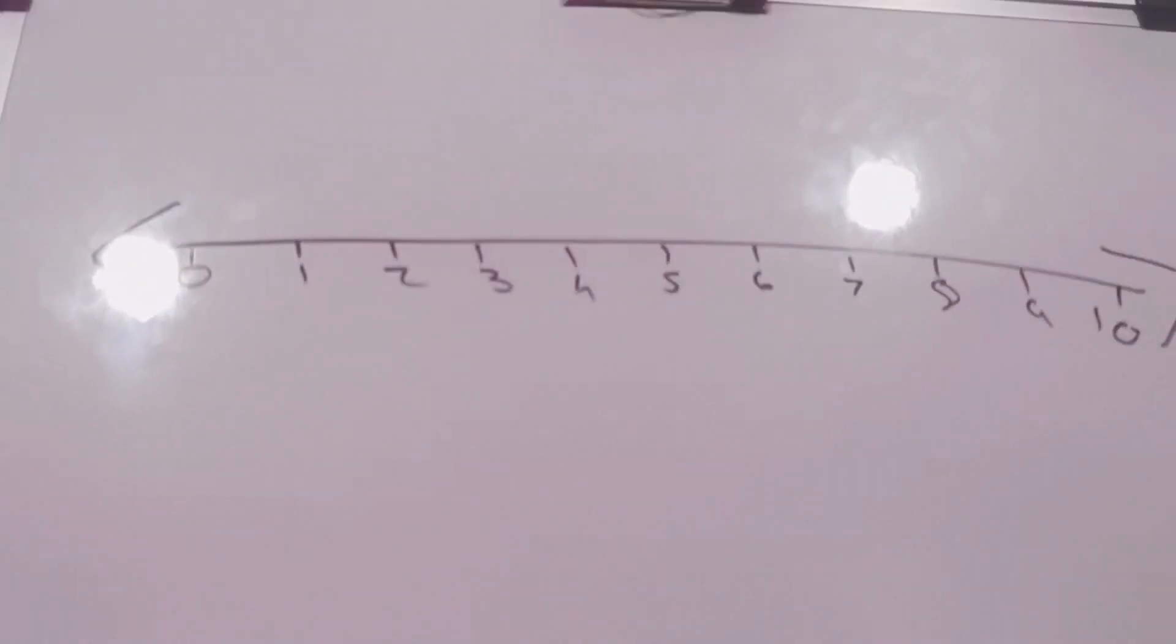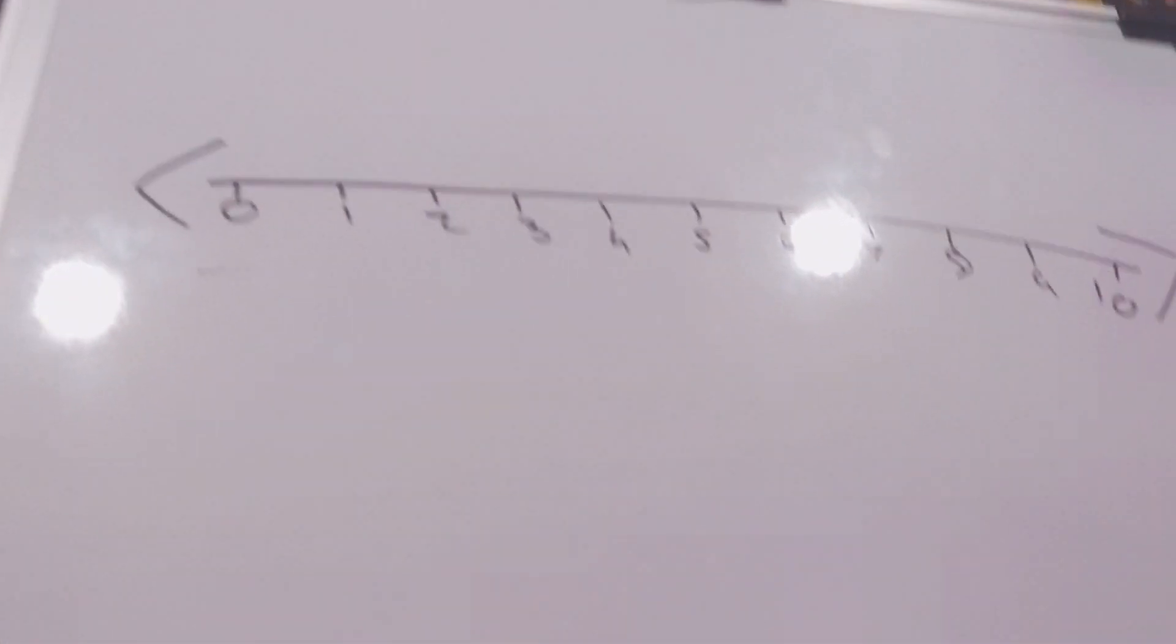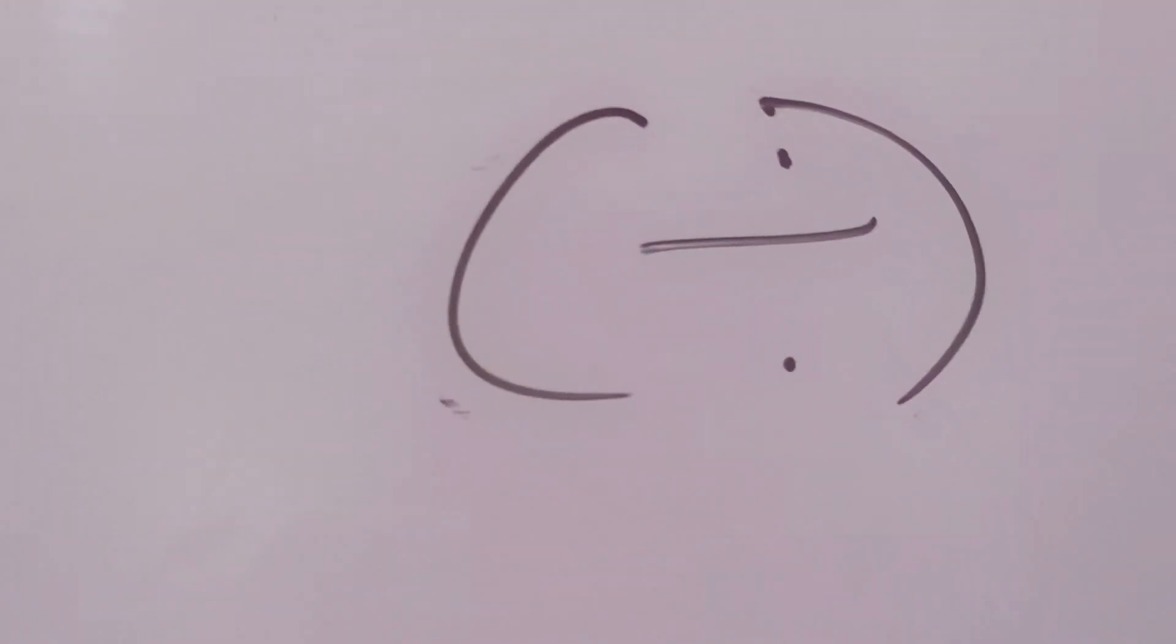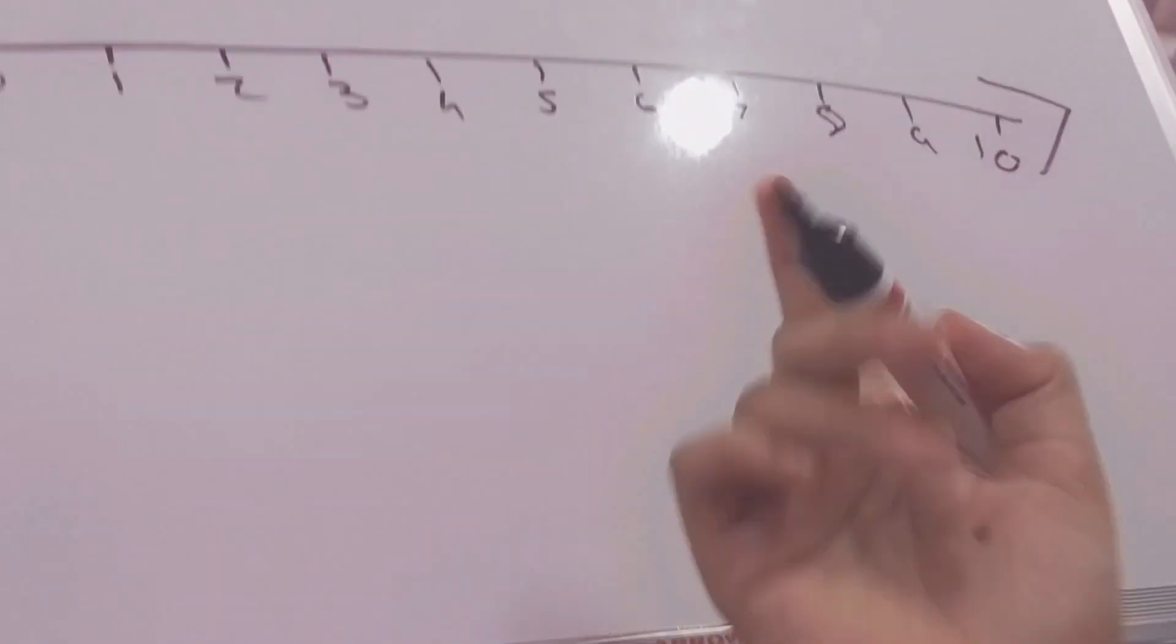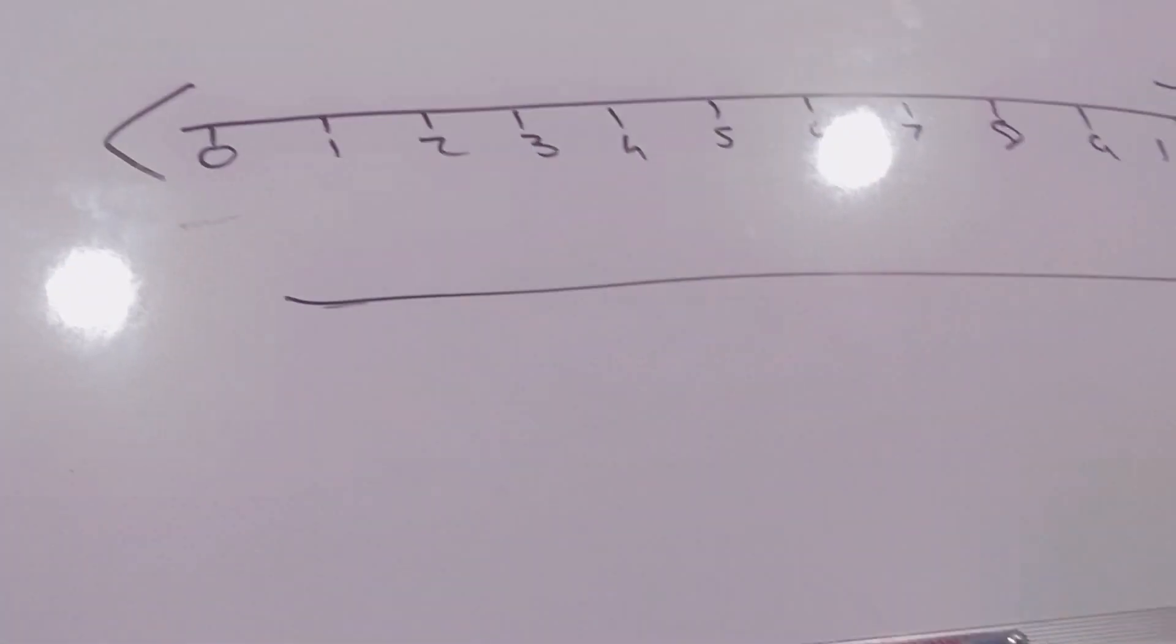So basically guys, we're going to learn four main operations on this number line. We're going to learn addition, subtraction, multiplication, division. Yes, we'll also learn fractions after we learn all the four operations.